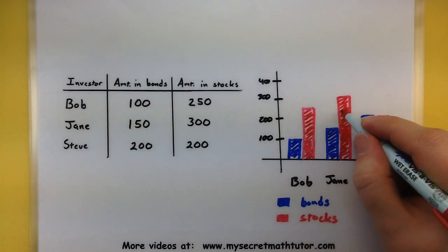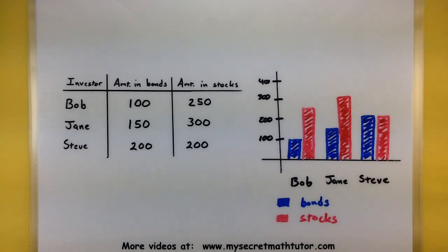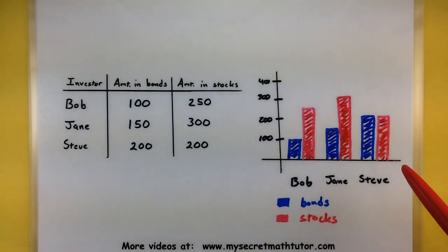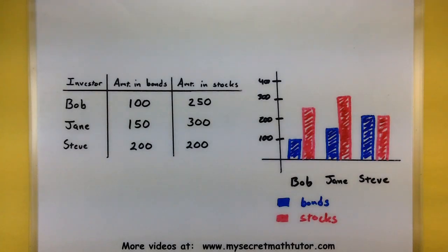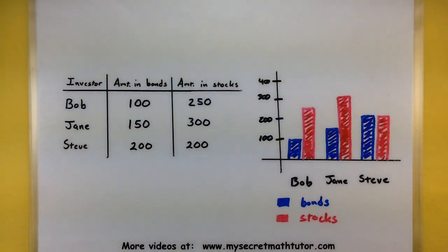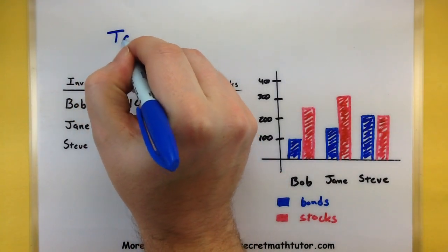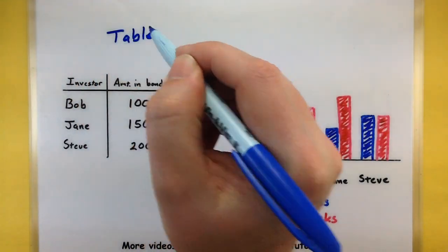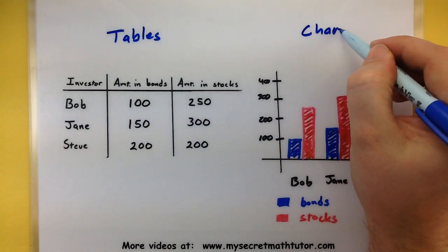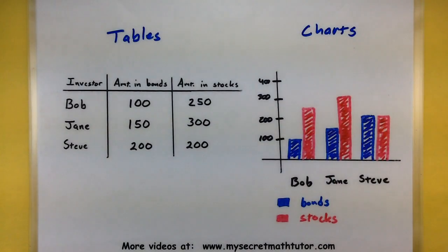Now that we have some nice visuals, you can see that the data is a lot easier to read. For example, if I want to know if anyone has the same amount in both bonds and stocks, Steve stands out quickly because he's the only one with two bars that are exactly the same height. There are many other types of charts you can use, which I'll cover in other videos. Keep in mind that a lot of your data starts in tables, but you can visually see it using charts. Please visit MySecretMathTutor.com for more videos.